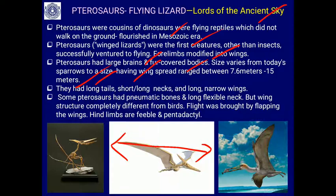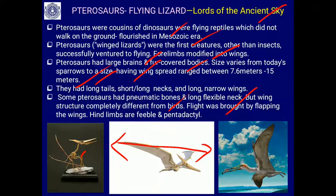Pterosaurs had large brains, fur-covered bodies, and some were feather-covered also. They had long or short necks, long or narrow wings, and some had long tails. Some pterosaurs had pneumatic bones and a long flexible neck. Their wing structure was completely different from birds — it was like a structure in between a bird and a bat, having a patagium — a skin membrane — supported by elongated bones, similar to a bat's wing. Flight was brought about by flapping the wings.